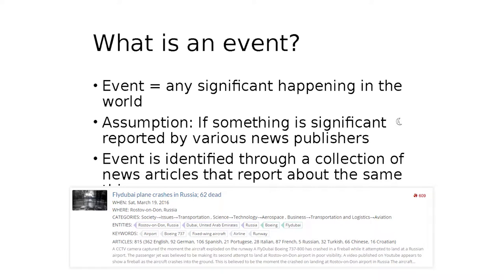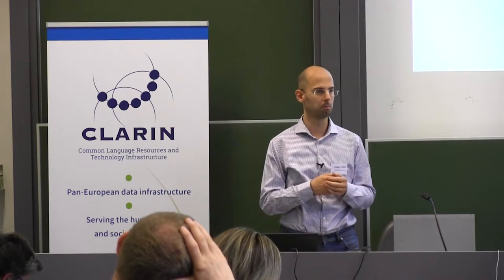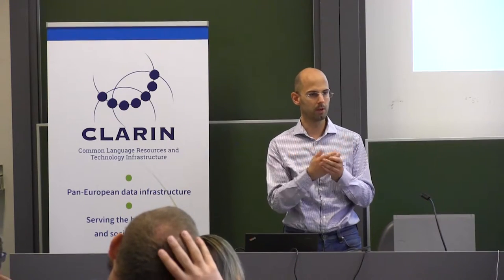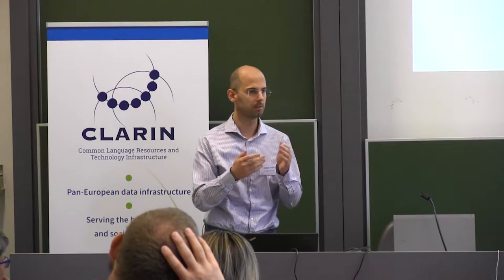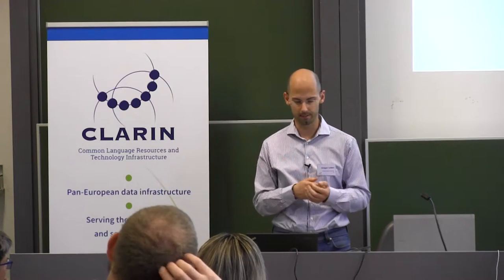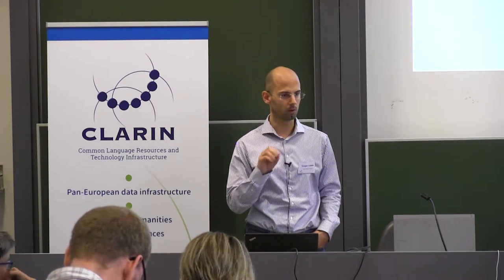First we need to define what an event is. For us an event is simply something that's significantly happening in the world. The assumption is that if something is significant then it's going to be reported by several news publishers. If a plane crashes, it's for sure going to be reported by several publishers. If somebody in New York has an opinion and writes a news article about it, that's probably not an event — he's the only one reporting about this. So we don't detect that as an event.